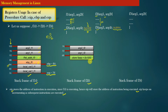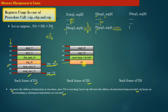The next step is to store the base pointer register value of the caller function into f2's stack frame. At this point the EBP register stores the address 84, so we copy the caller's base pointer register value — 84 — into the stack memory of frame f2.